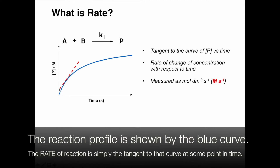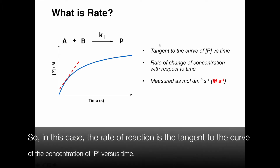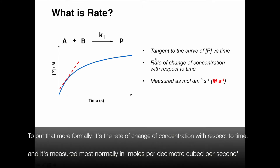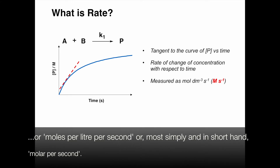The rate of reaction is simply the tangent to that curve at some point in time. We could show similar graphs for the decay of reactants A and B. More formally, the rate of reaction is the rate of change of concentration with respect to time, and it's measured most normally in moles per decimetre cubed per second, or moles per litre per second, or most simply in shorthand, molar per second.